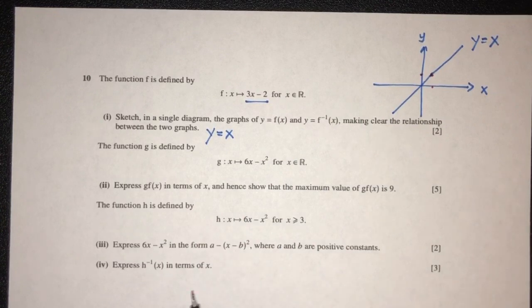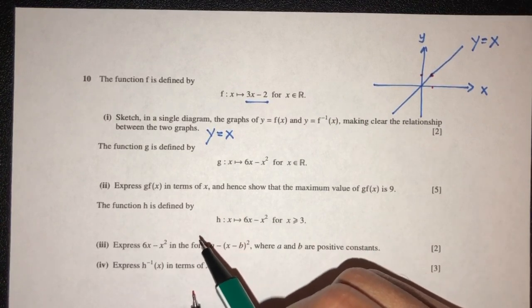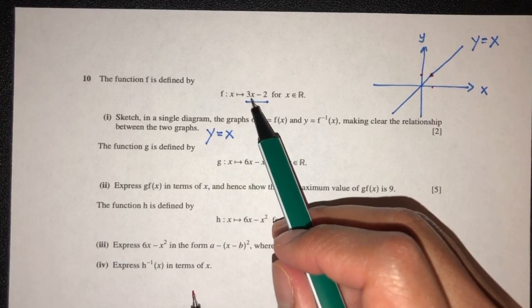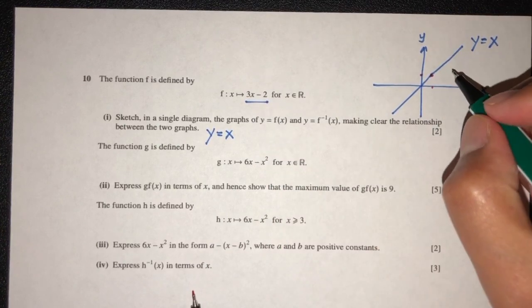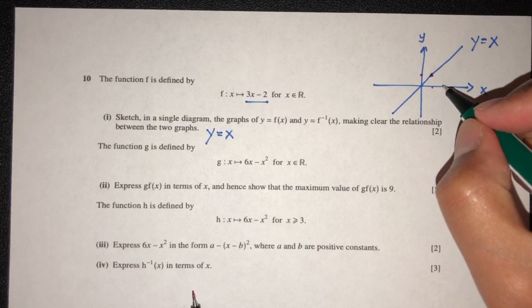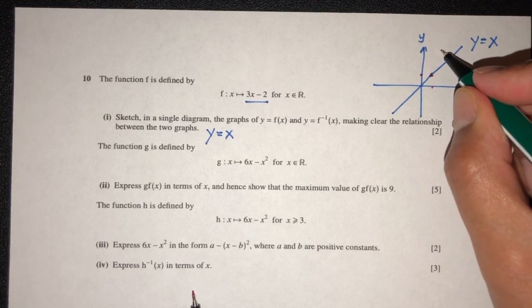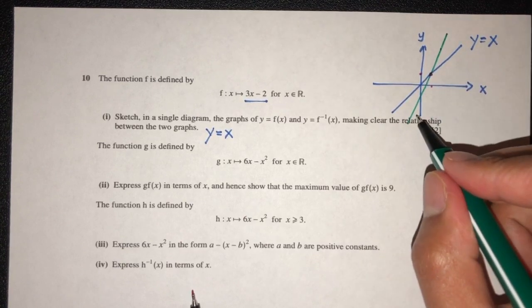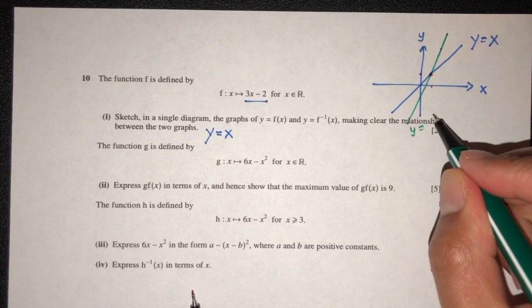And when the value of x equal to, let's say 2, that will be 2, 3 times 2 is 6 minus 2, which should be 4. So it will be way upwards, somewhere over here. So that will be the shape of the graph. That will be y equal to f(x).